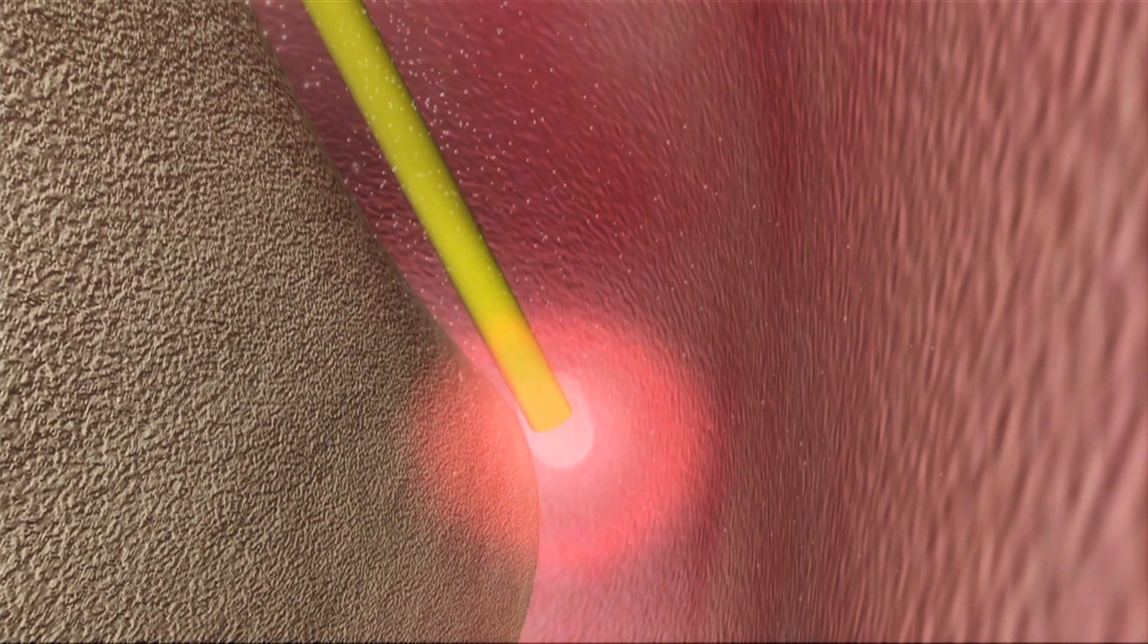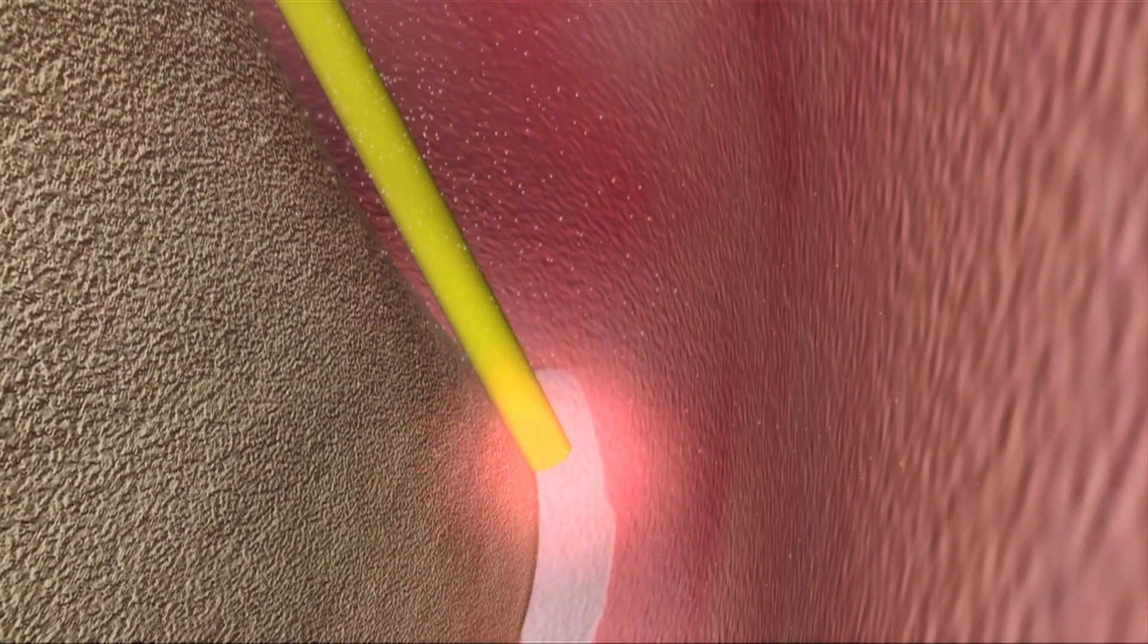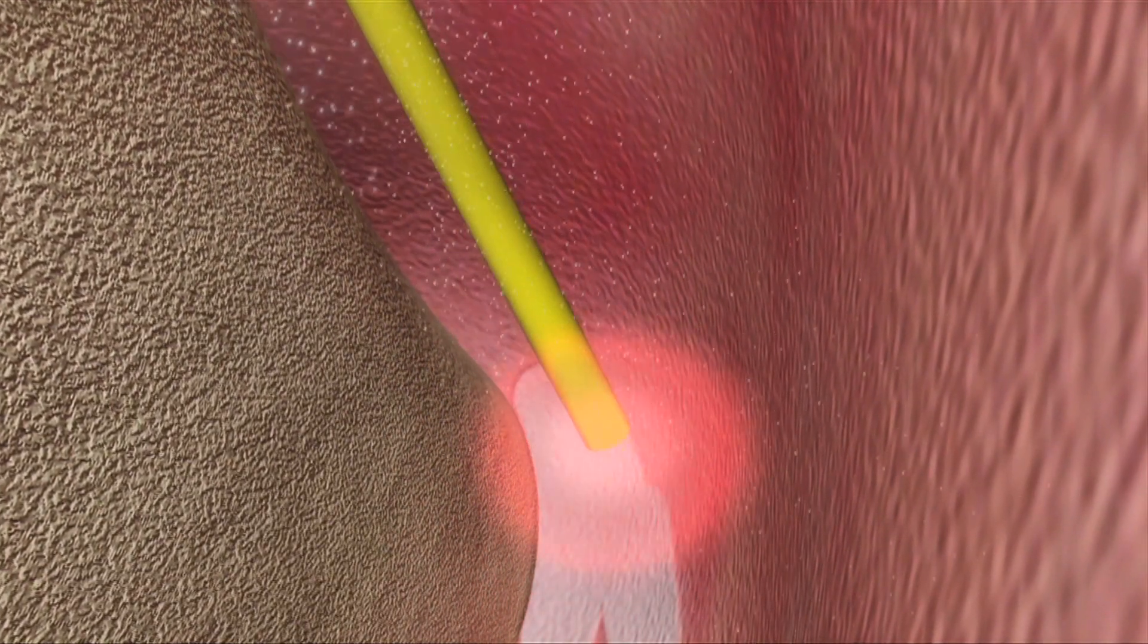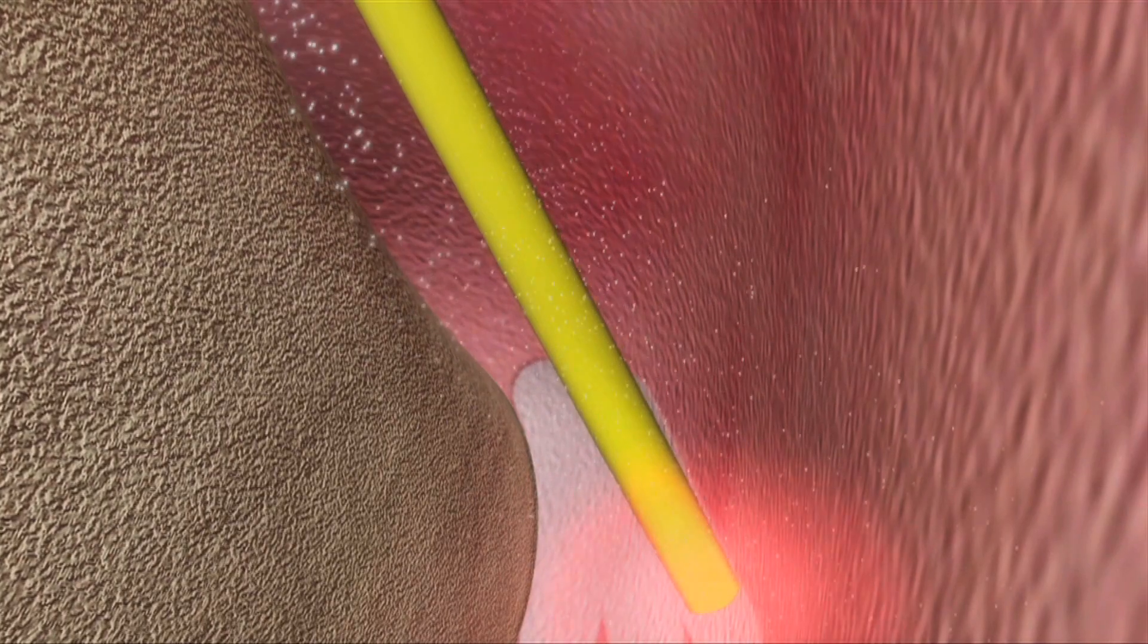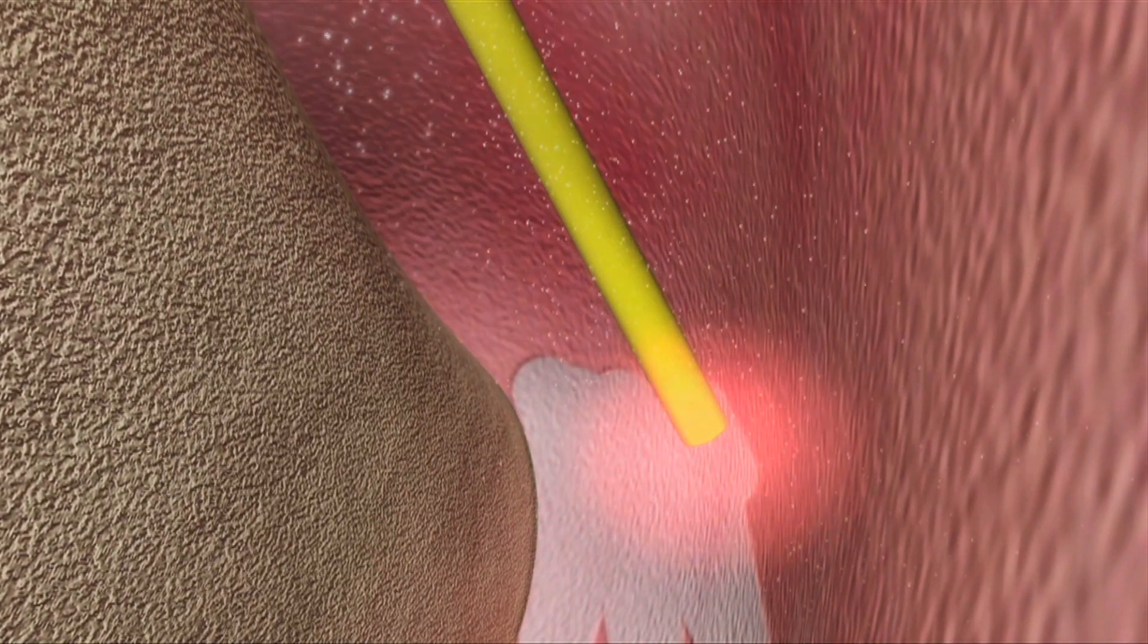The Erbium YAG laser is then used to dissect the periodontal attachment from the bottom of the pocket to the bone. This is necessary to stimulate the regenerative factors from the bone that will help with healing in the periodontal defect.